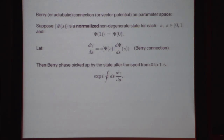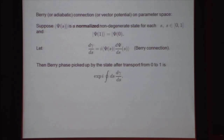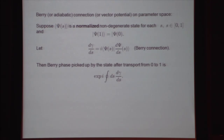This must be for a closed path because Psi of zero equals Psi of one; otherwise the answer isn't gauge invariant. I can change the phase of my states Psi of S for each S — that's a gauge transformation. If I don't go back to zero equals one, it's not gauge invariant and so it doesn't mean much. That's why there's a circle on the integral — it's a loop in parameter space.